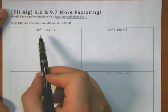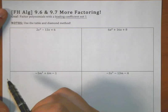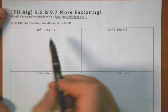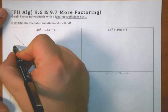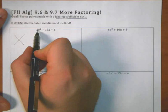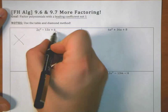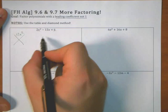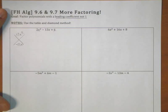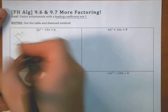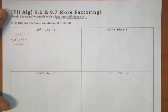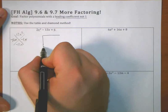Again, I have a trinomial here. In my method, it says I need to start by finding, seeing if there's a greatest common factor. In this case, there's nothing in common amongst all three. So then I create myself a little diamond. I get the multiply box by multiplying the first term and the last term. So 2x² times 6 is 12x². I get the adding box by the linear term. And I solve this diamond problem.